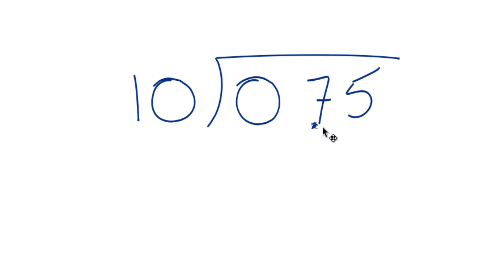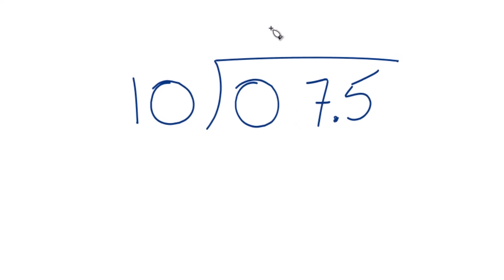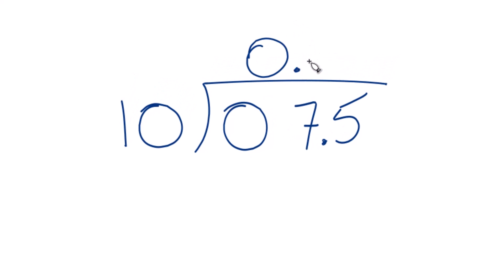So you could move the decimal place over here, 1, if you put a 0 and a point here. But 10 doesn't go into 7 either, so I'm just going to move it over 1 more and then put a 0 here.